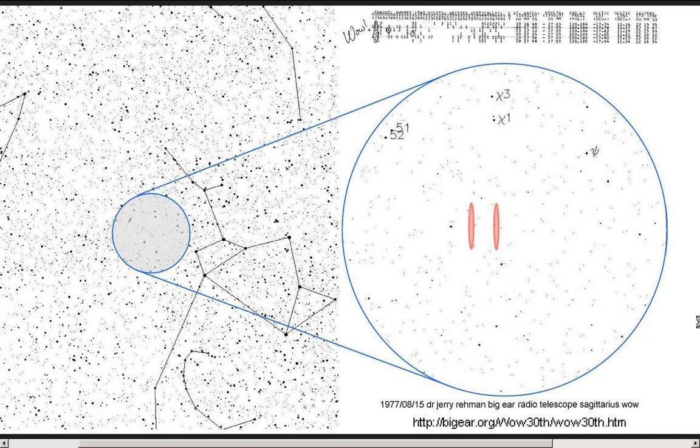This is about the 1977, August 15th, Dr. Jerry Renman Big Ear Radio Telescope Wow Signal from Sagittarius. This is an approximate map of the location in the sky where it came from. It was from two different feedhorns. Now, there's only a couple of things within the feedhorn range. I'm going to show you that.